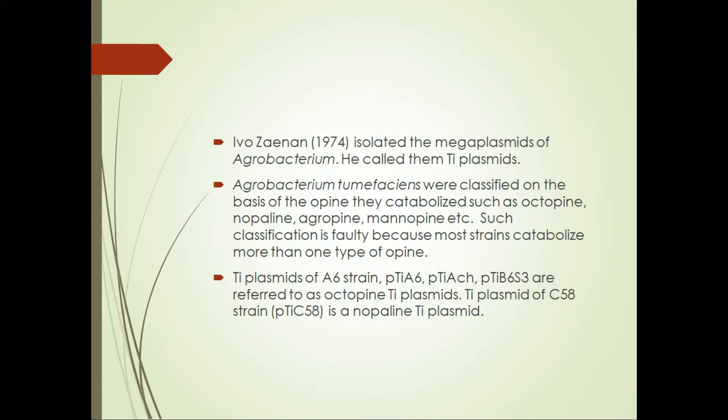This bacterium is classified on the basis of the opines they catabolize. There are different types of opines: octopine, nopaline, agropine, manopine, and others. These opines are basically a source of food for the bacterium, and the bacterium contains the genes necessary for synthesis of these opines, located in a part of the Ti plasmid. However, this classification is not always correct because many strains can catabolize more than one type of opine.